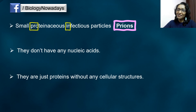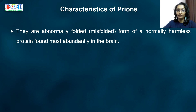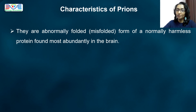That means they are non-living, right? That's the reason why they are not included in Whittaker's classification system. Actually, prions are just an abnormally folded, or misfolded, form of a normally harmless protein found most evidently in the brain.